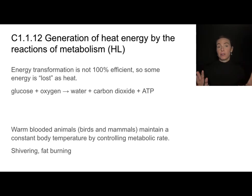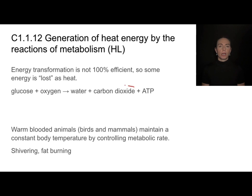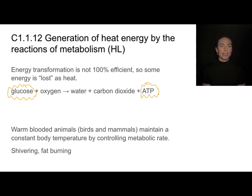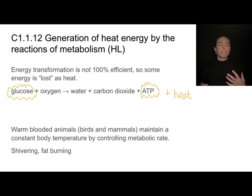When we think about cell respiration — taking glucose and oxygen and converting them into water, carbon dioxide, and ATP — the goal is to convert the chemical energy in glucose into chemical energy in ATP. But we're very inefficient at that process. In addition to ATP, the reaction also produces heat. In fact, we're about 90% inefficient, meaning most of the energy is lost as heat.